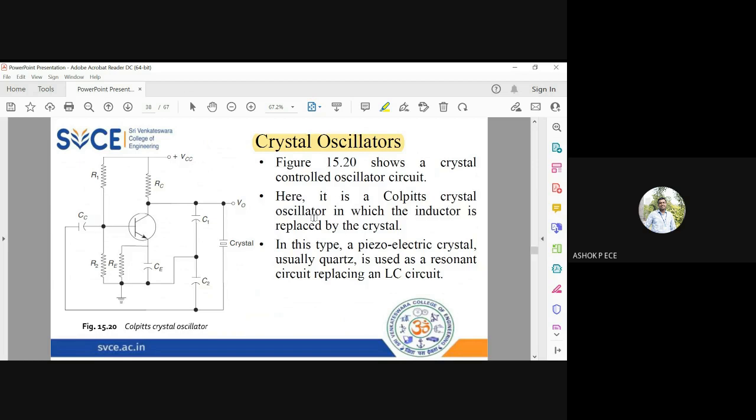That is the reason many electronic circuits don't consider inductors as part of their network. They try to replace inductors with a suitable alternative. One such alternative is a crystal.